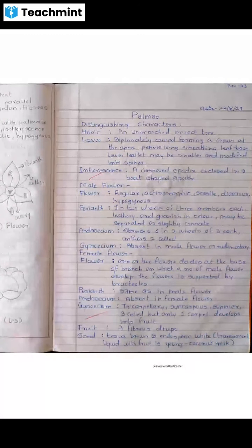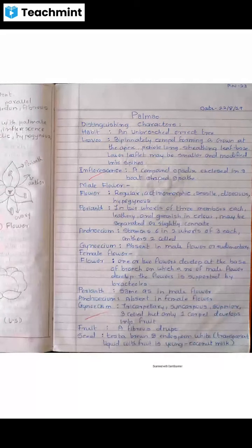Distinguishing characters: Habit — unbranched erect tree. Leaves pinnately compound, forming a crown at the apex. Petiole long, with a leaf base. Lower leaflets may be smaller and modified into spines.